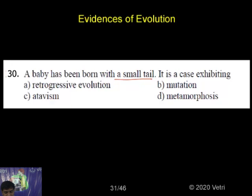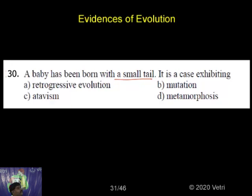So first, in human beings during the fetal stage, a postnatal tail is formed in the embryo in the mother's womb. First the postnatal tail develops. After the second stage, the tail undergoes modification and legs are formed. After that, the legs undergo modification.